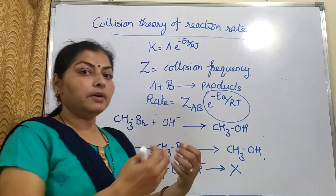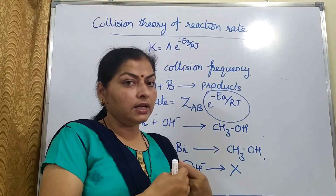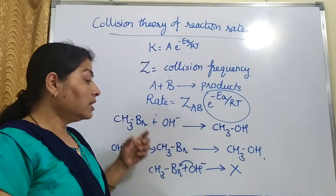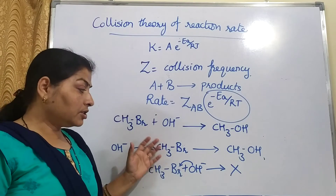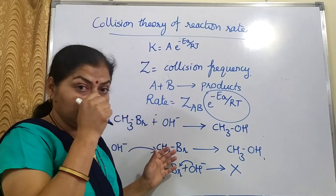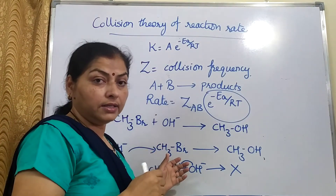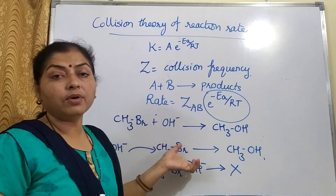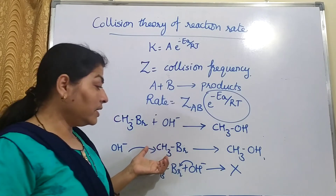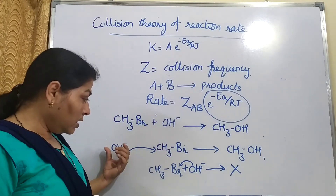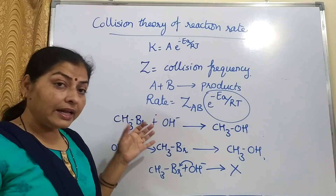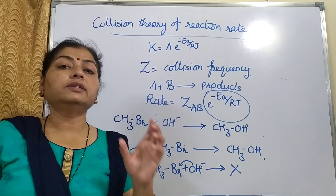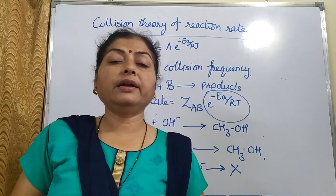Collision with proper activation energy is needed. The number of collisions will also matter. The third thing that matters is the proper orientation of the molecules. This bromomethane reaction — which we will study in the haloalkanes and haloarenes chapter — is actually an SN2 reaction mechanism. If the attacking reagent attacks from the back side, only then the product will get formed. So when the molecule is complex, the orientation will matter a lot.